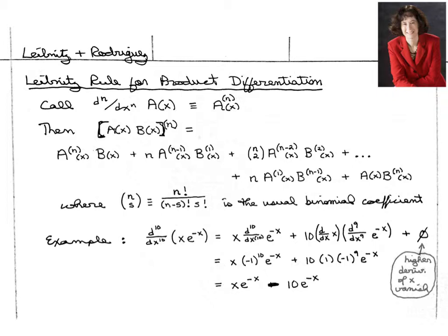If we separate these, then we can use the Leibniz rule and say, well, 10 derivatives of this product of functions is the sum of a whole set of terms.